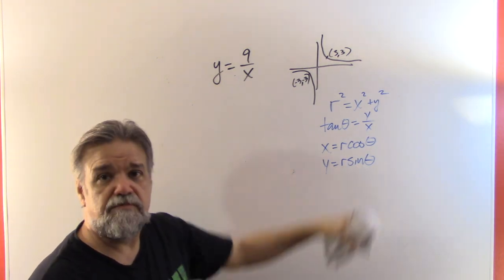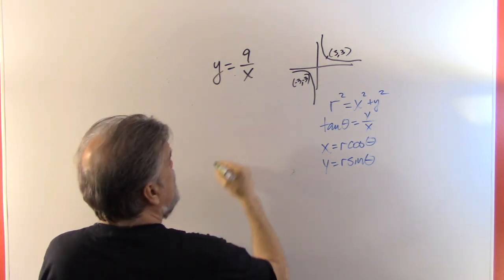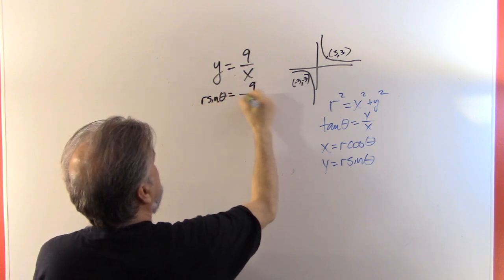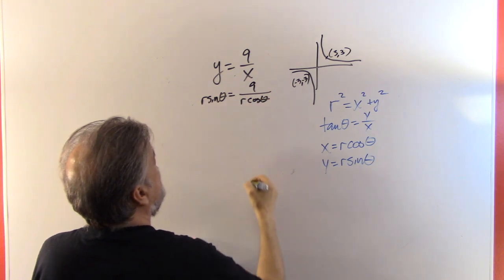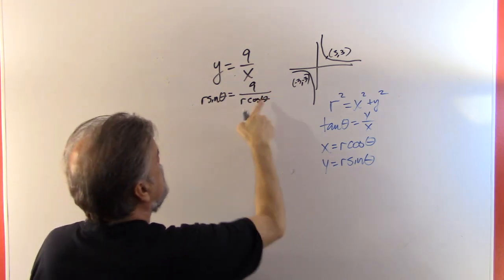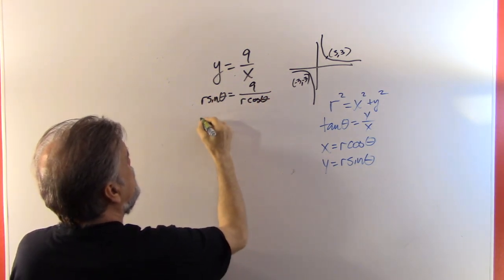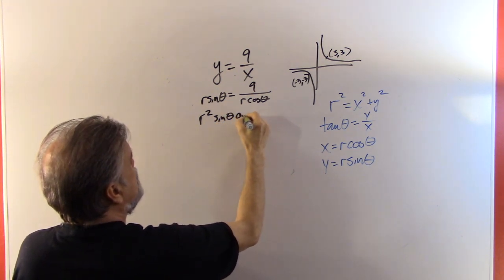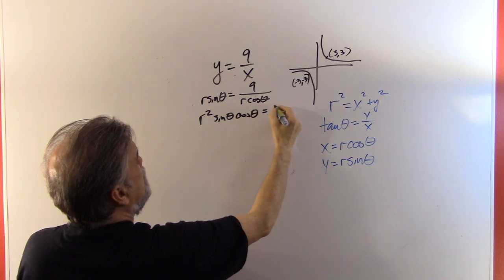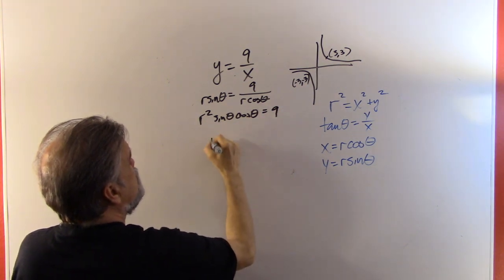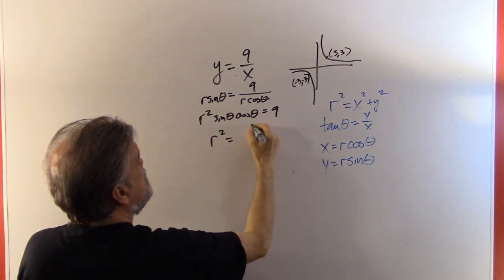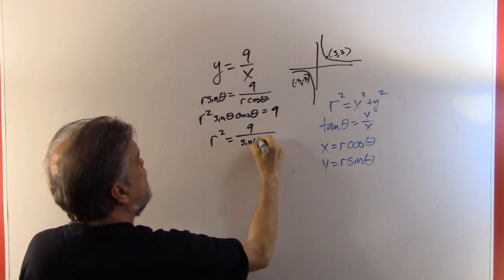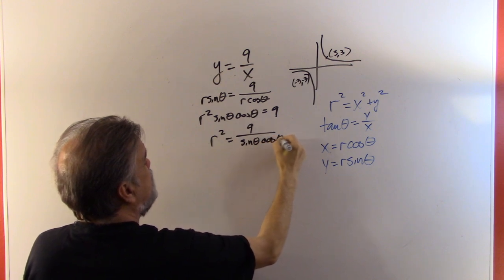So how to put that into polar coordinates? I guess we'll just make this substitution again. So r times the sine of theta equals 9 divided by r cosine of theta. Well, multiply both sides times r cosine of theta and you'll get r squared times the sine of theta times the cosine of theta equals 9, which means r squared equals 9 over the sine of theta times the cosine of theta.